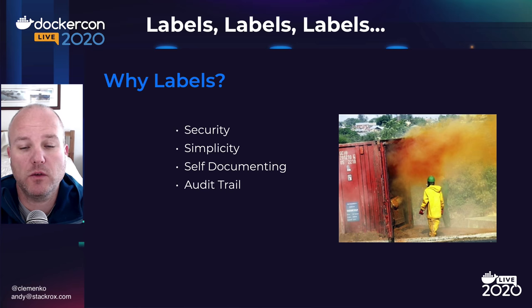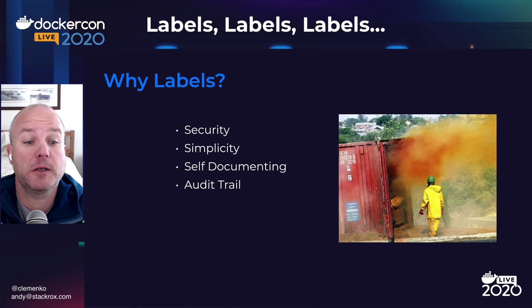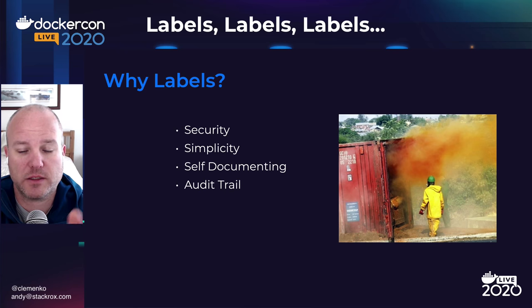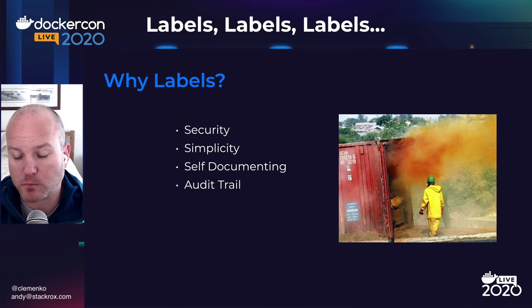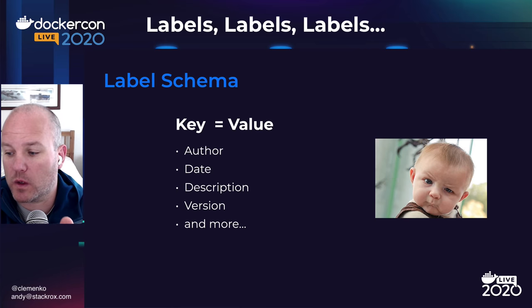One interesting way we can prevent that is through the use of labels. We can use labels to address security, address some of the simplicity on how to run these images. Think of it as self-documenting, like an audit trail, image provenance — things like that. These are some interesting concepts that we can definitely mandate as we move forward.